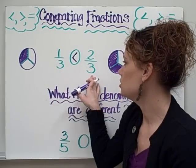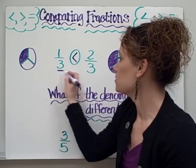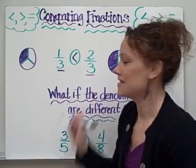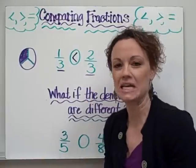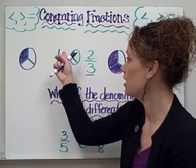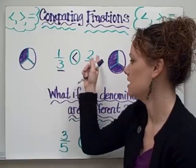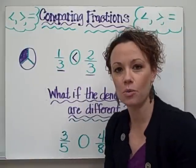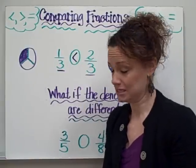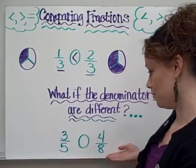Now this is pretty easy to do when our denominators are the same. Because it's pretty easy to see a picture or to just look at the numerators, and we know that one is less than two. However, what if your denominators are different?